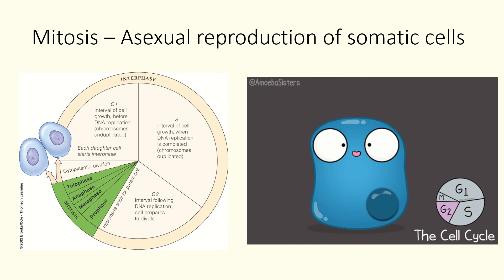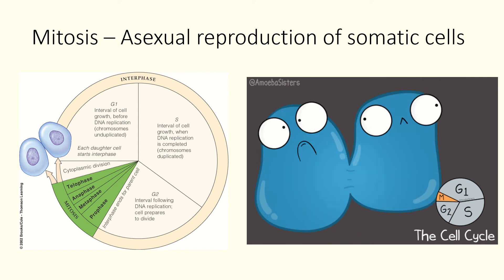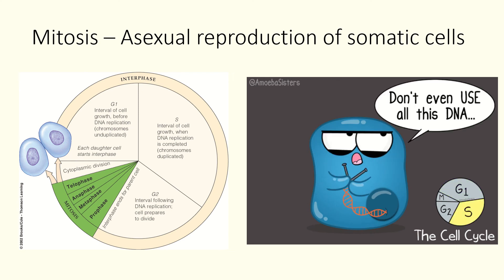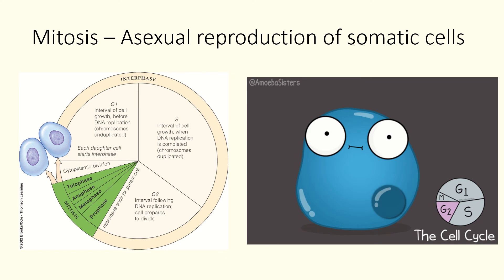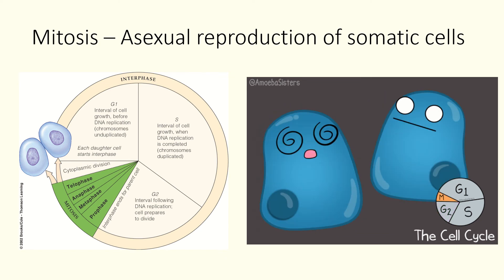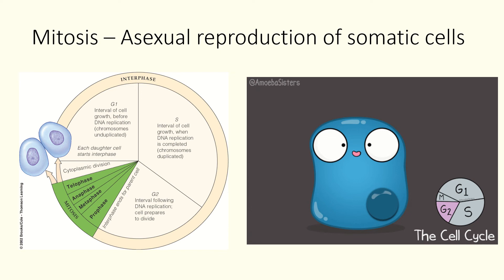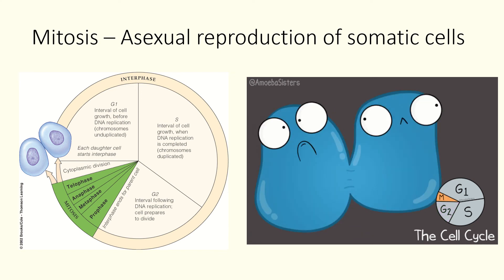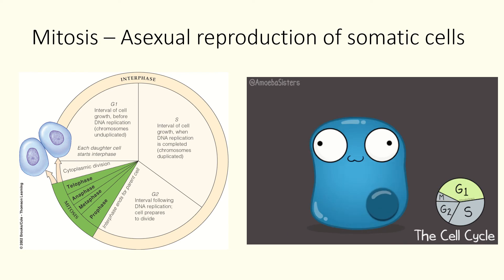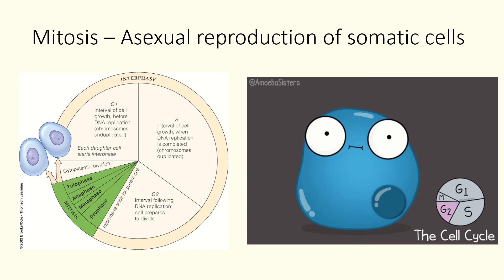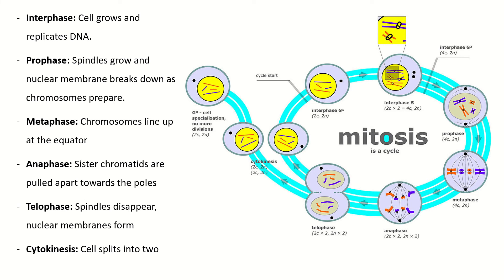In the G1 phase the cell is just chilling — it starts to grow, it's making or replicating that DNA. As it moves into G2 it begins to split, and then in mitosis we have that replication. One common misconception is that mitosis is a type of nuclear division — it's creating a new nucleus. It's not necessarily the cell replication itself; it's specifically that section where the nucleus is being copied.